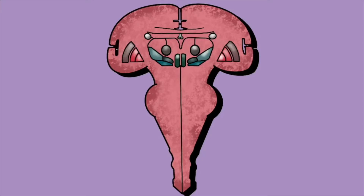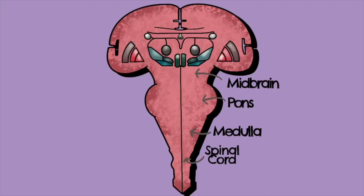In each case, the lower motor neuron is a cranial nerve that has a motor function, and it's going to have its cell body in the brainstem. Here we can see the components of the brainstem: midbrain, pons, medulla — and we also need to consider the spinal cord as well.